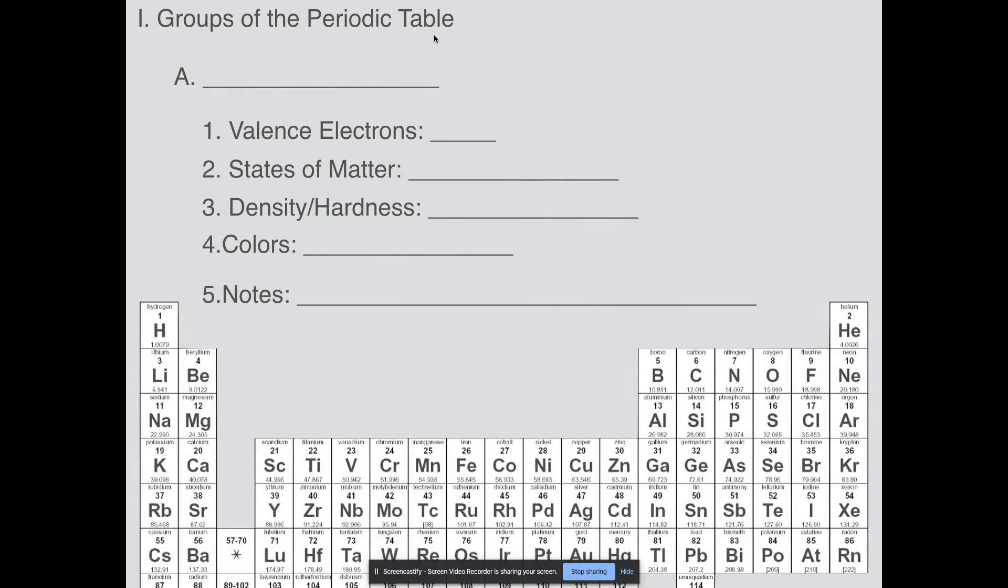The first group we're going to look at is the alkali metals. The alkali metals can be found on the far left side of the periodic table. They include lithium, sodium, potassium, rubidium, cesium, and francium. Notice that hydrogen is not an alkali metal, even though it's in this first column. That's also something to make sure you know. First thing you should know is that they have one valence electron. That's why they're in this first column, because they all share the property that they have one valence electron.